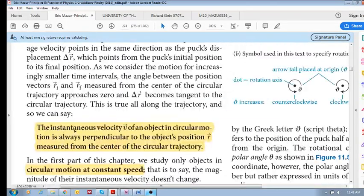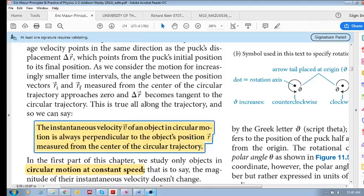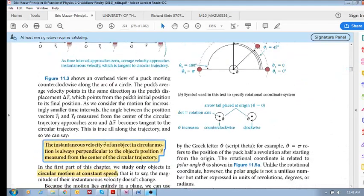Okay, so let's look here. It says the instantaneous velocity v of an object in circular motion is always perpendicular to the object's position measured from the center of the circular trajectory.